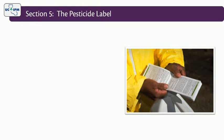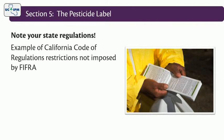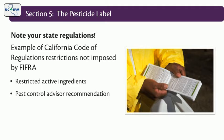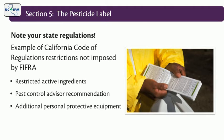Always make applications in strict accordance with all label instructions and state and local regulations. It is important to note what your state regulations are, because sometimes, particularly in California, some state regulations are not written into the label. For example, Title III of the California Code of Regulations lists restrictions not imposed by FIFRA. There are some additional restricted active ingredients where permits and applicator licenses are required. In California, a PCA recommendation is required to apply restricted materials. Additional personal protective equipment is required in California. Also, in the case of soil fumigants, there are some additional buffer zones and rate restrictions. You can check with your Ag Commissioner for information on these additional regulations.